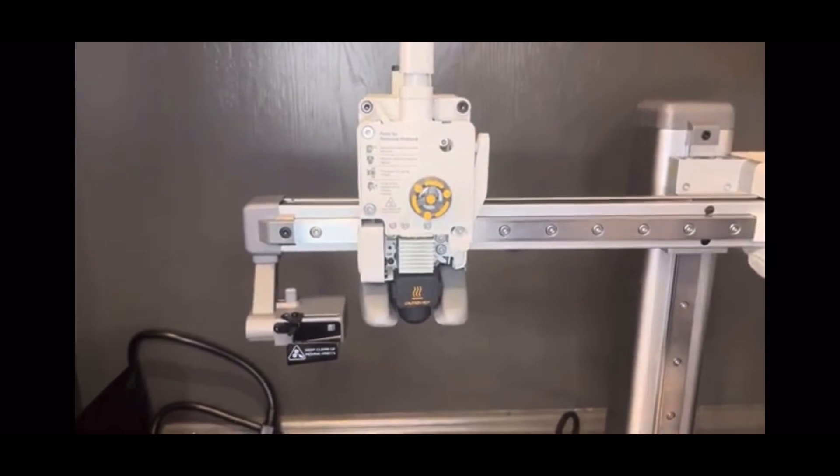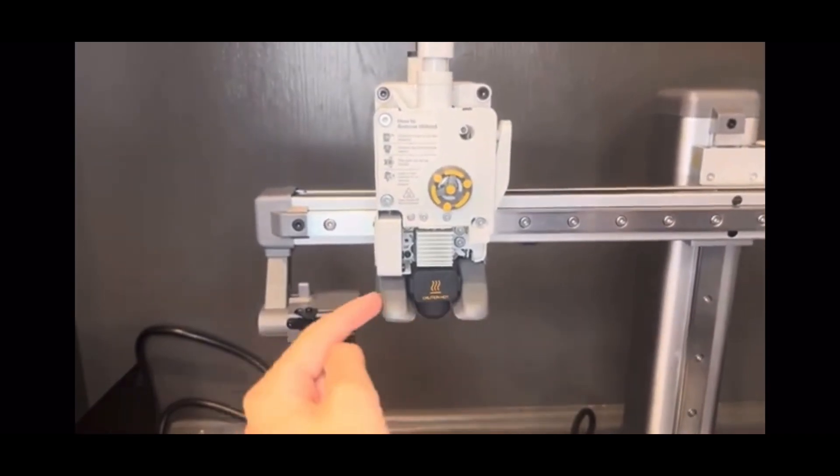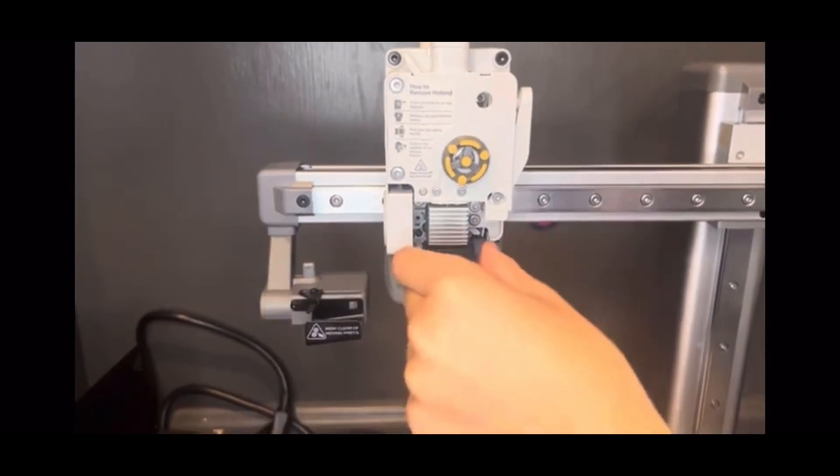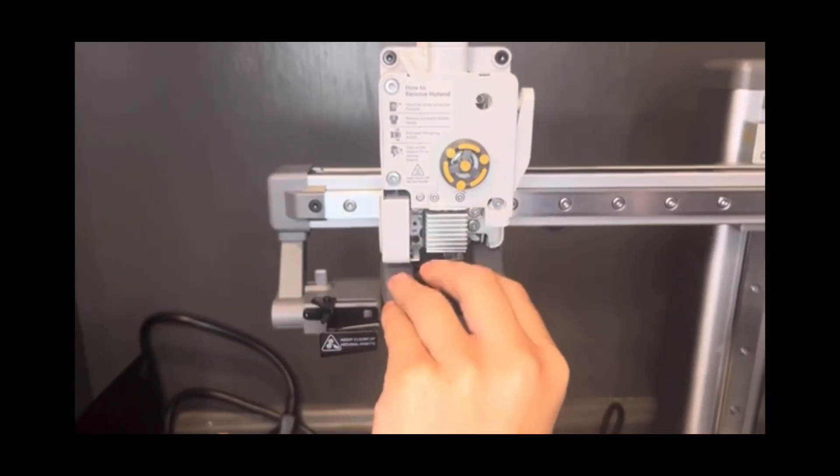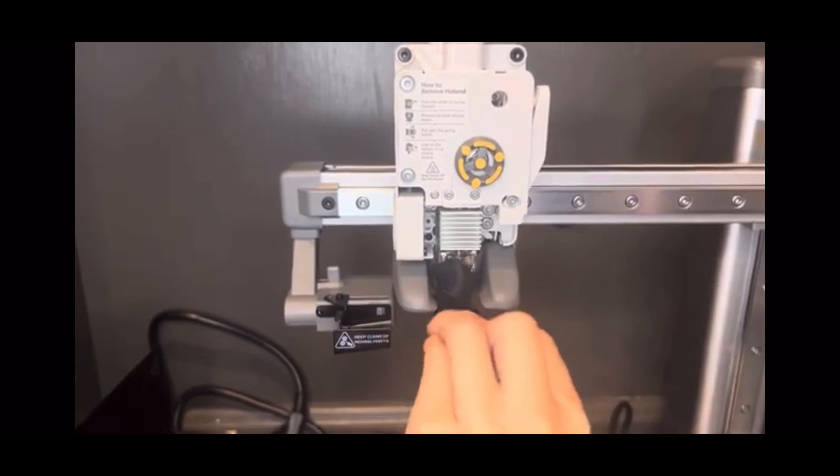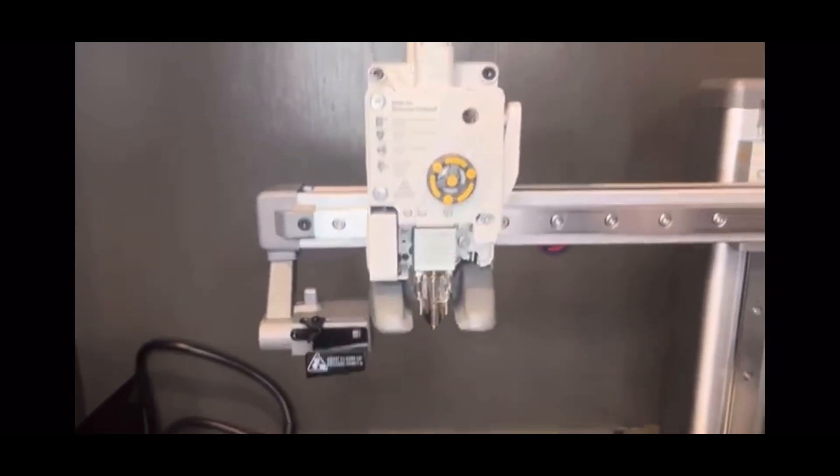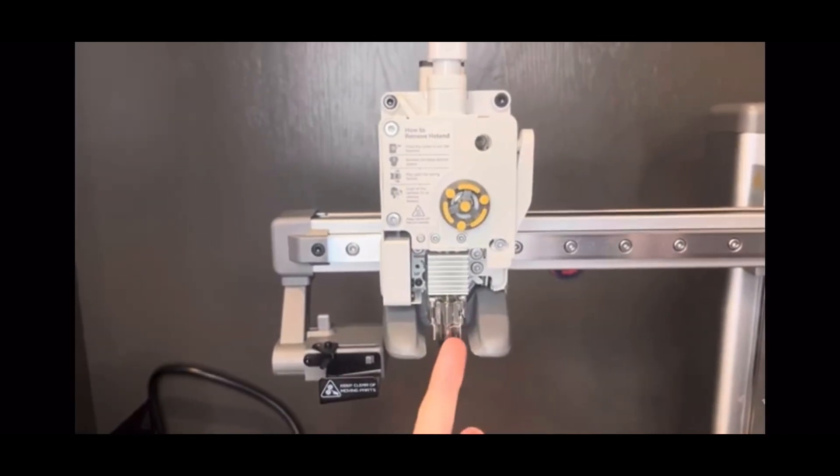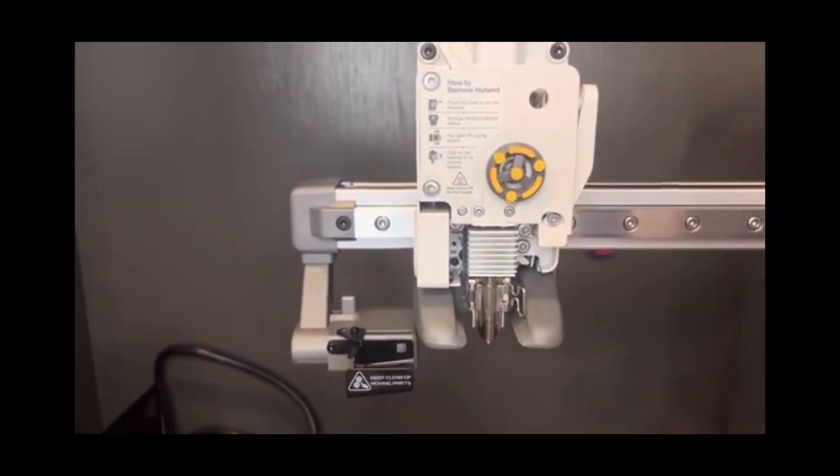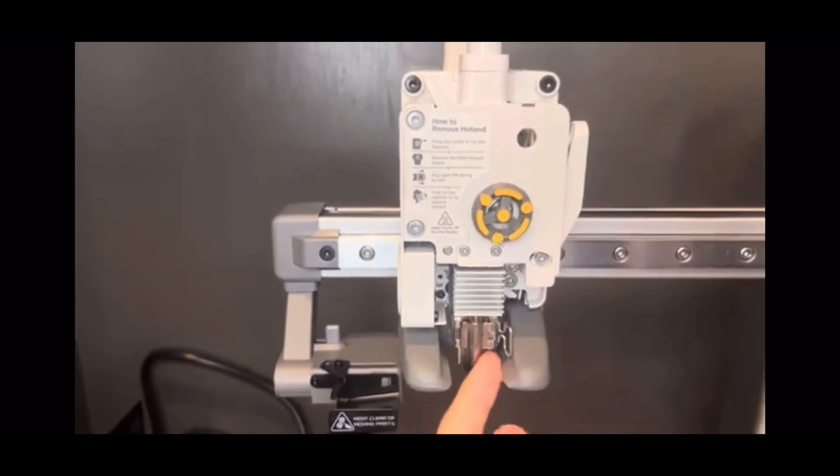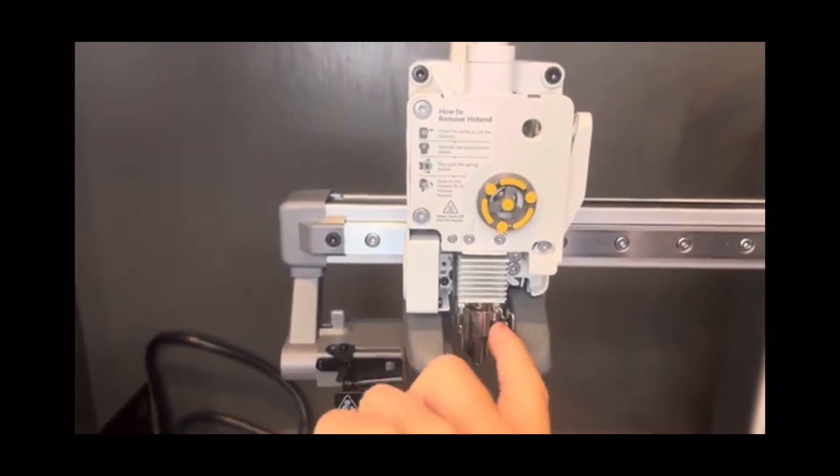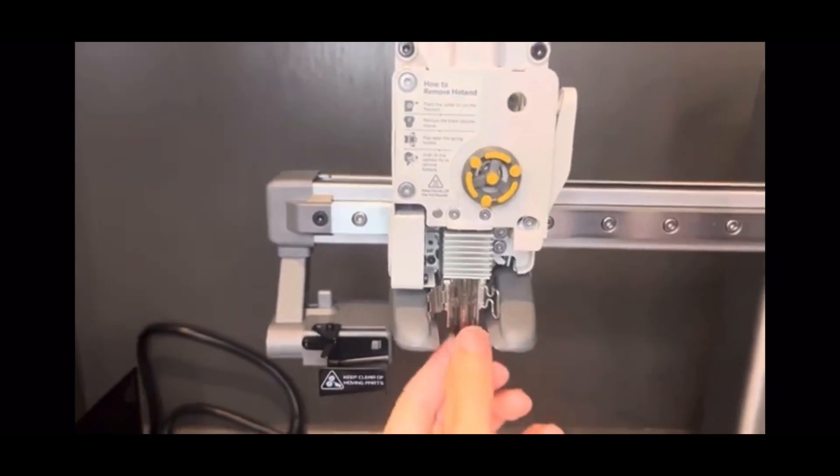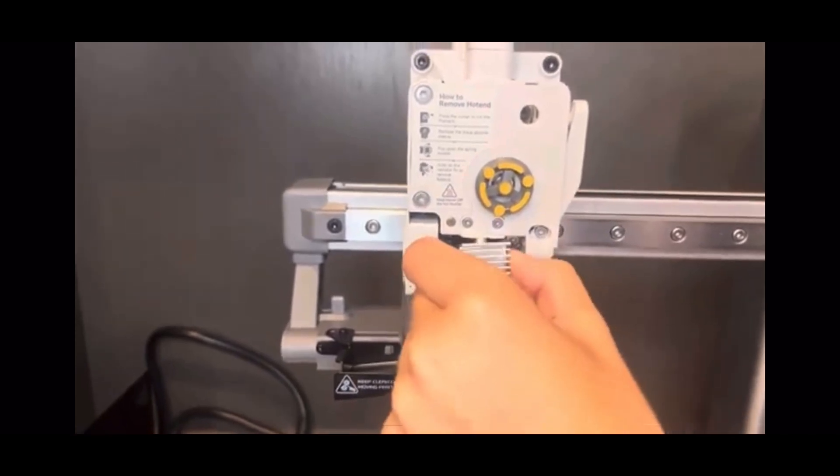Set that to the side because we're going to use that later. Next, you're going to see this heat cover right here that you just gently pop off. Then there's a latch right here that you just flip open and make sure that it's open.